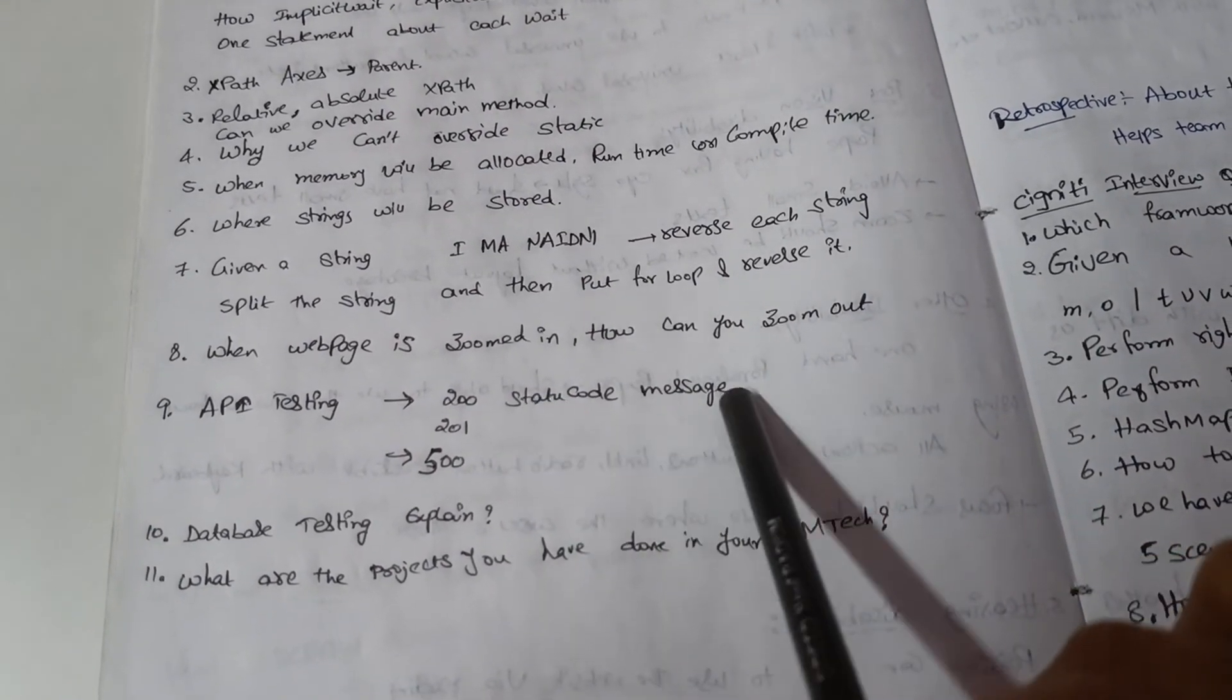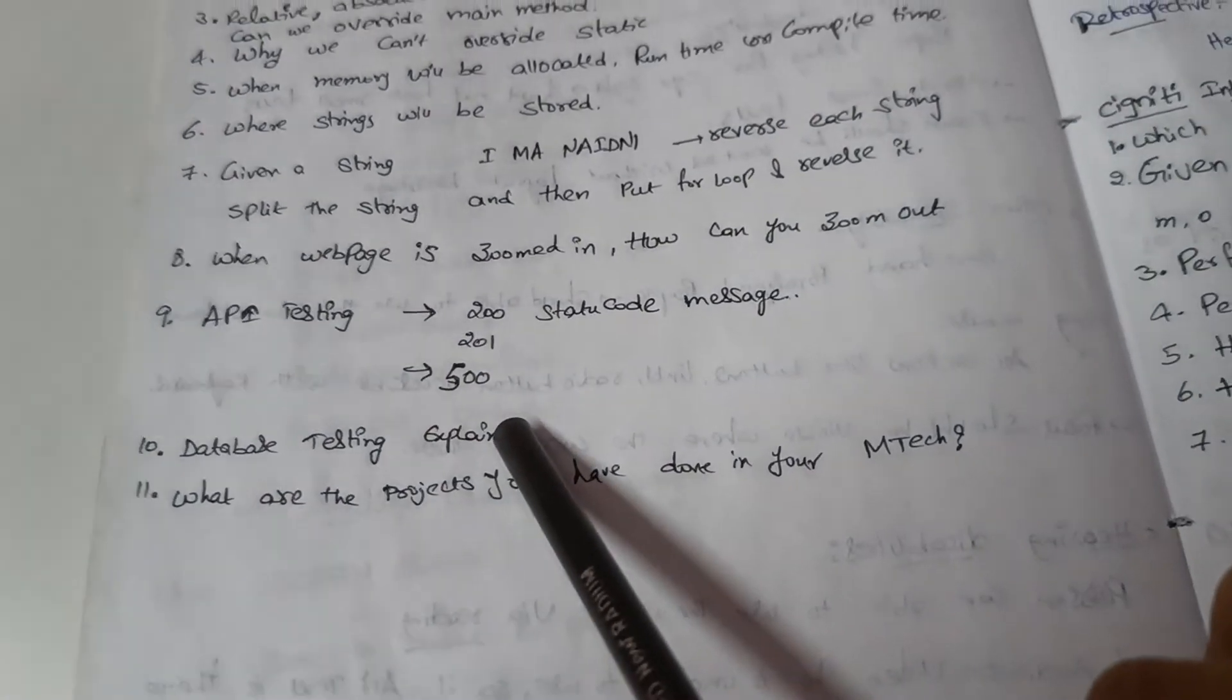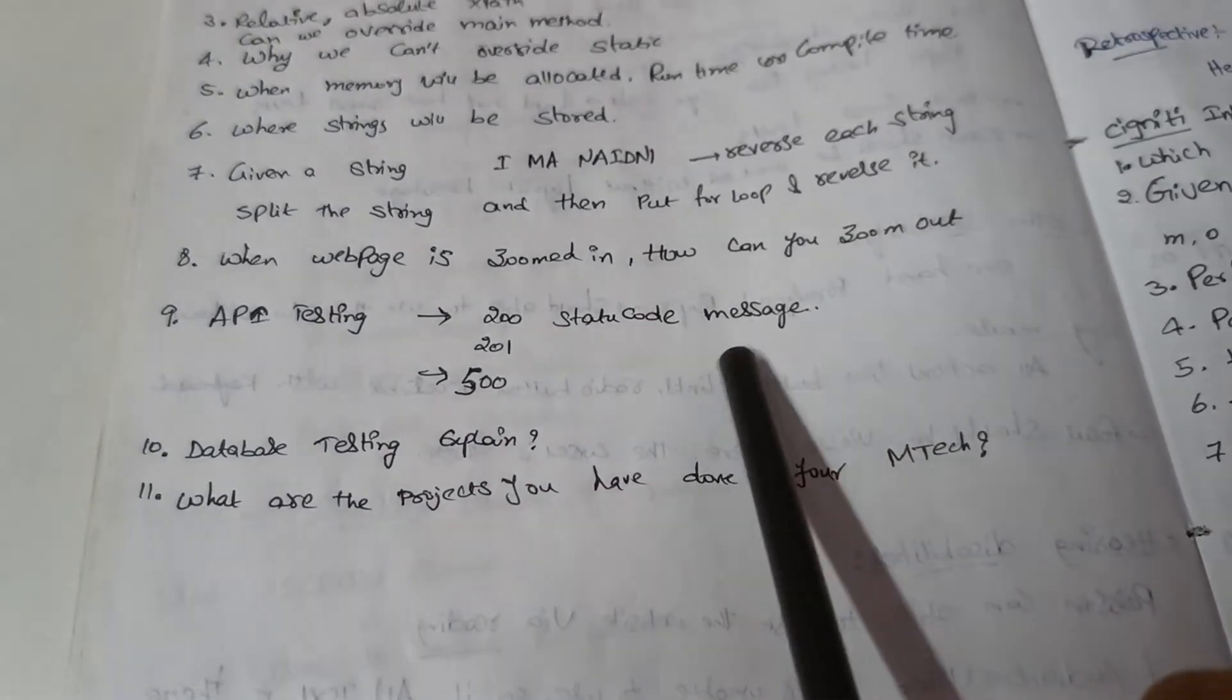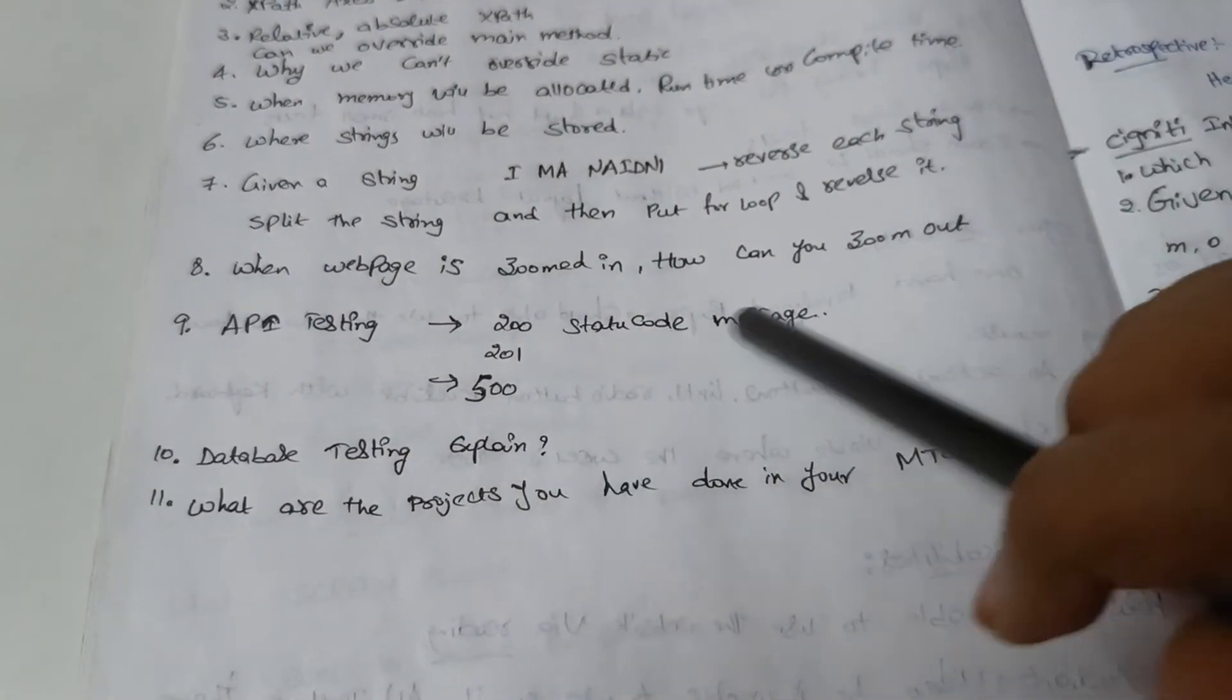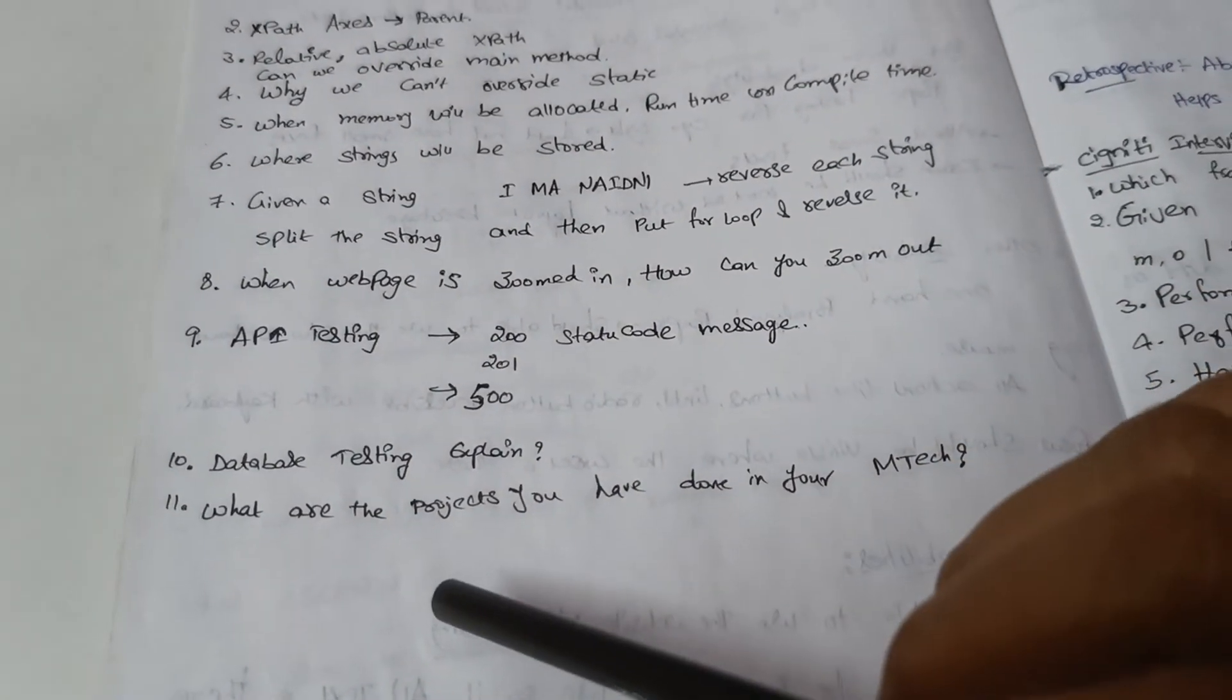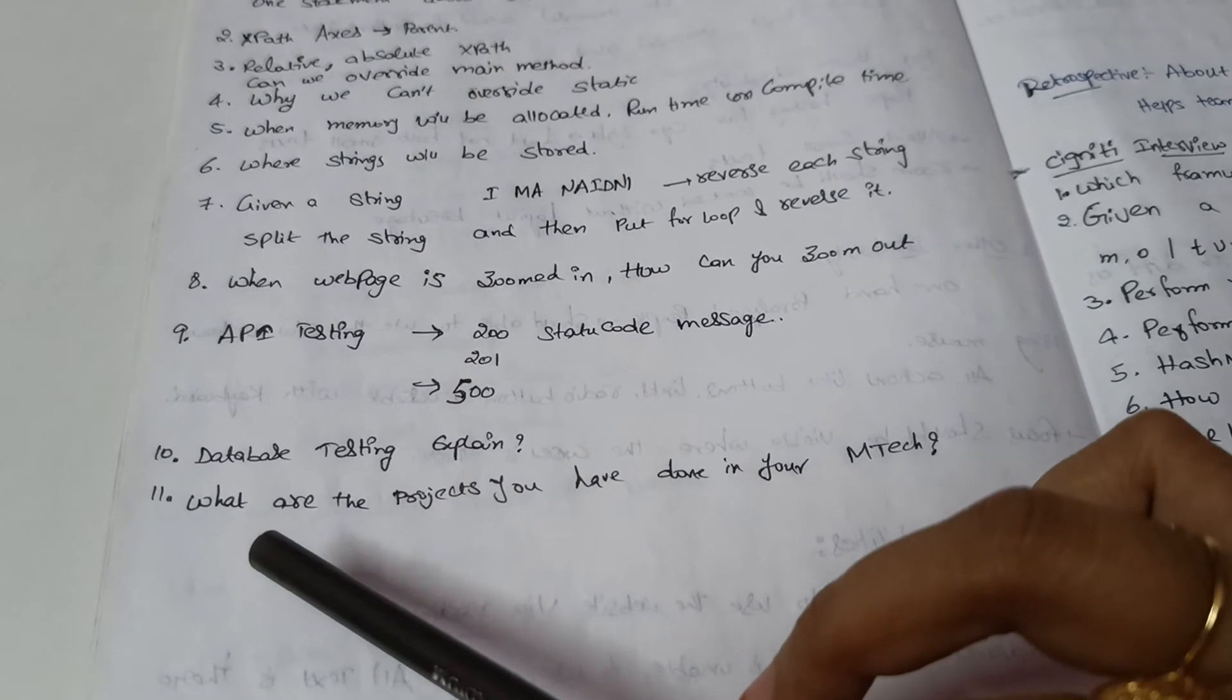Also, a few questions on API testing about the response codes - what 200 response code will say, also 201 and 500. Also asked me to explain about database testing.